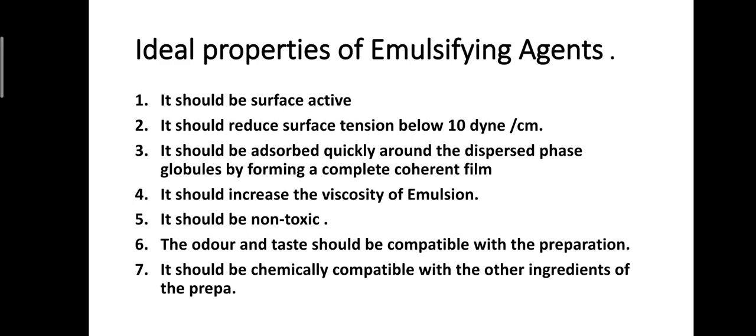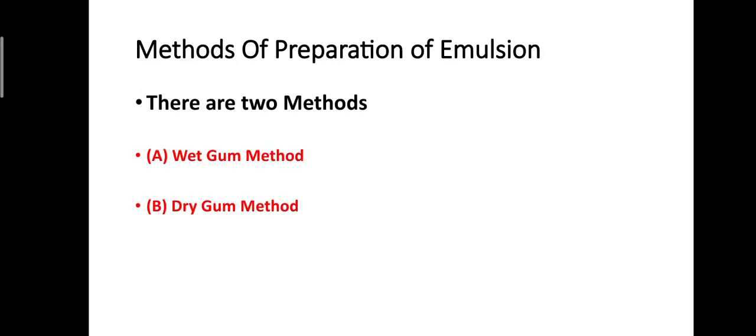Ideal properties of emulsifying agents — a commonly asked exam question. The emulsifying agent should be: surface active; reduce surface tension below 10 dynes per centimeter; be adsorbed quickly around dispersed phase globules forming a complete coherent film; increase the viscosity of emulsion; be non-toxic; have compatible odor and taste; and be chemically compatible with other ingredients of the preparation.